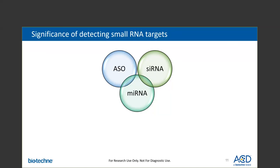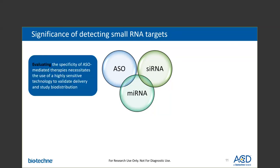For example, ASO-mediated therapy is a new form of RNA-interfering solution to inhibit target-specific genes. The detection of ASOs requires a highly sensitive technology to evaluate the specificity of ASO-mediated therapies and to study gene expression after the delivery of the ASO therapy.